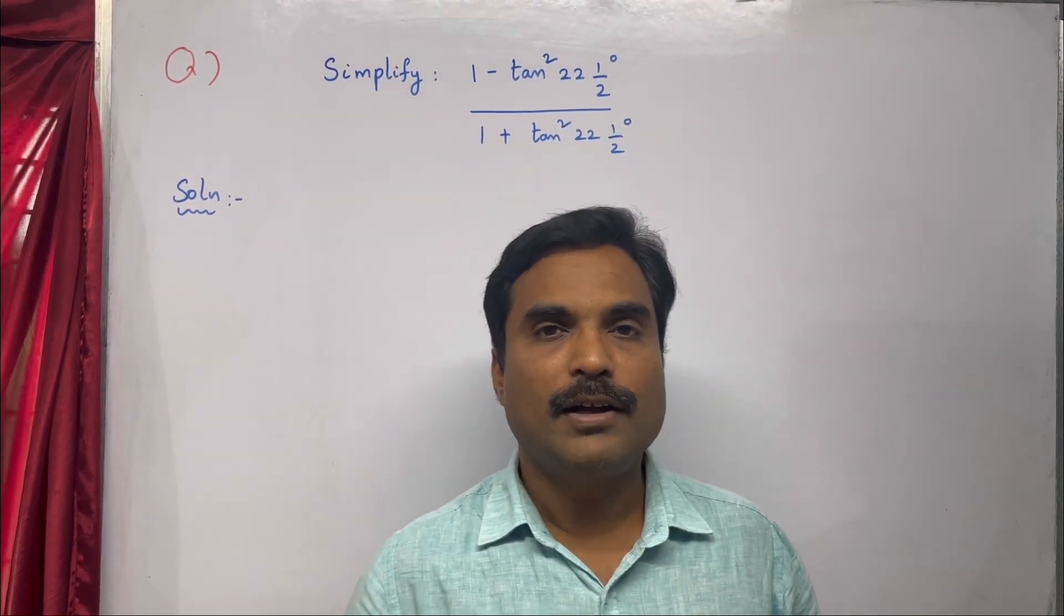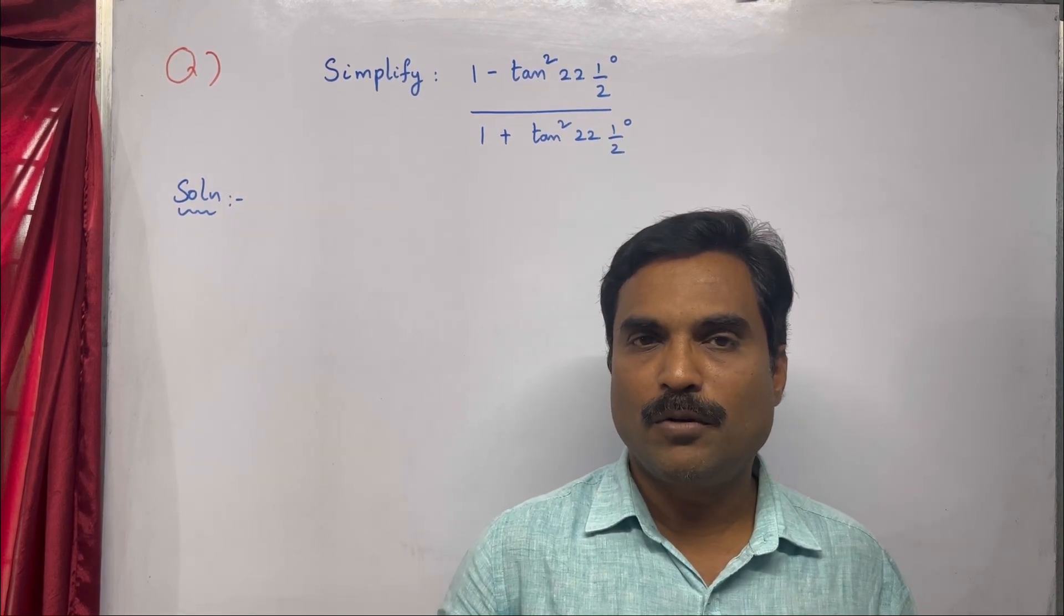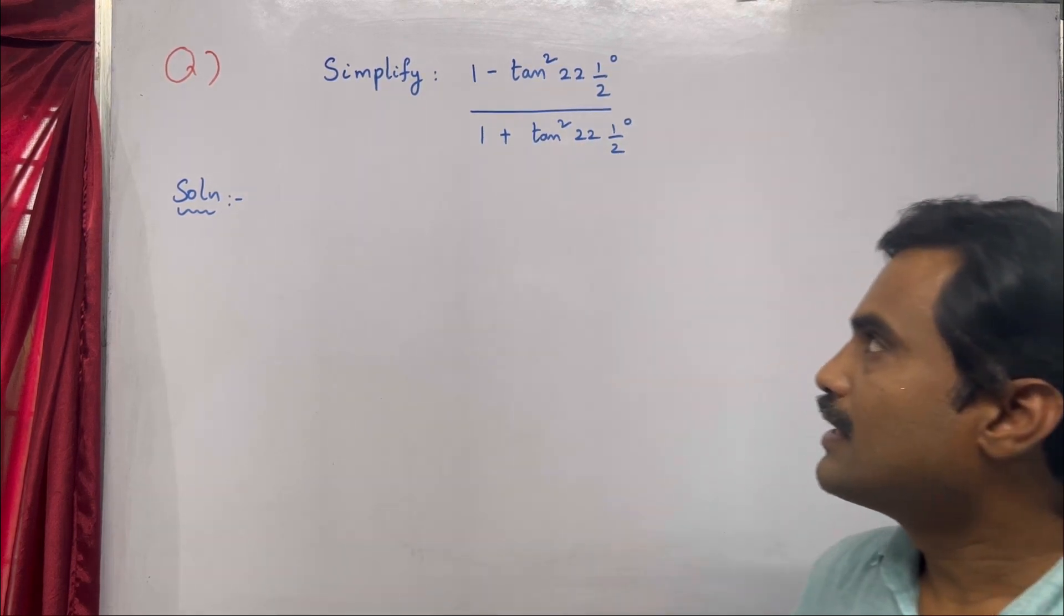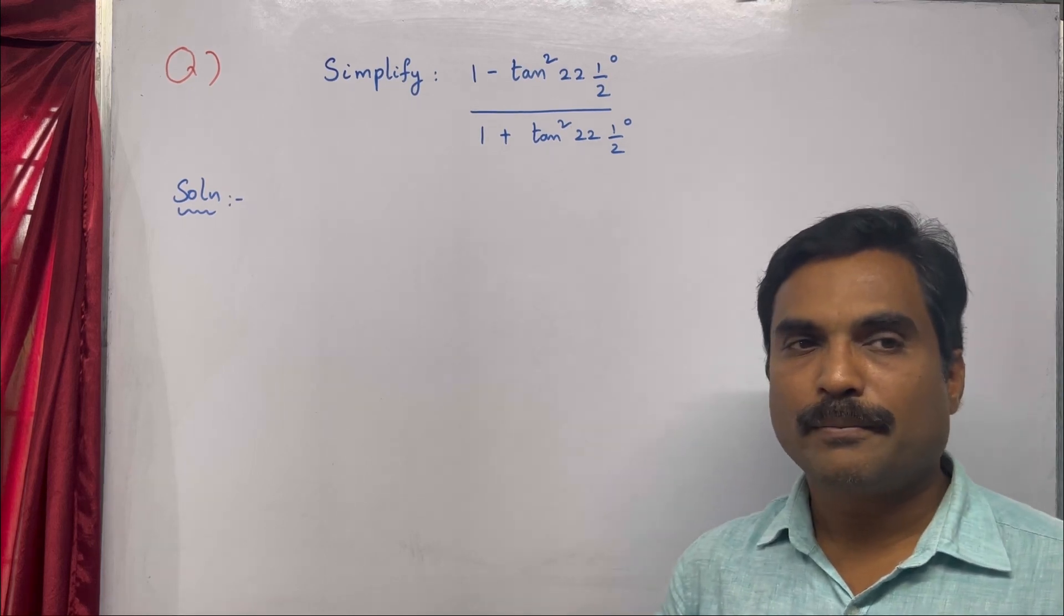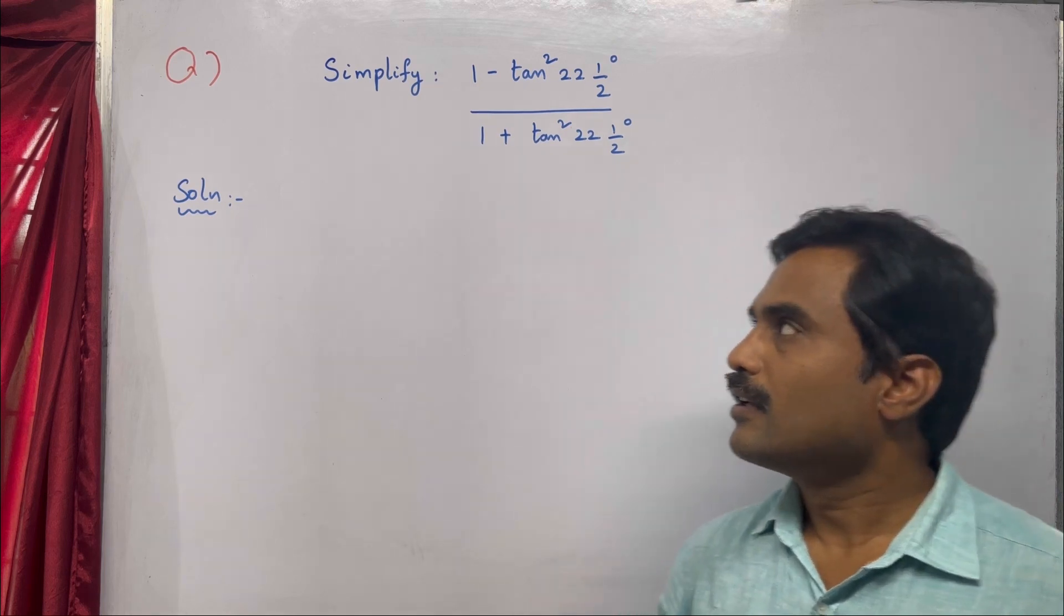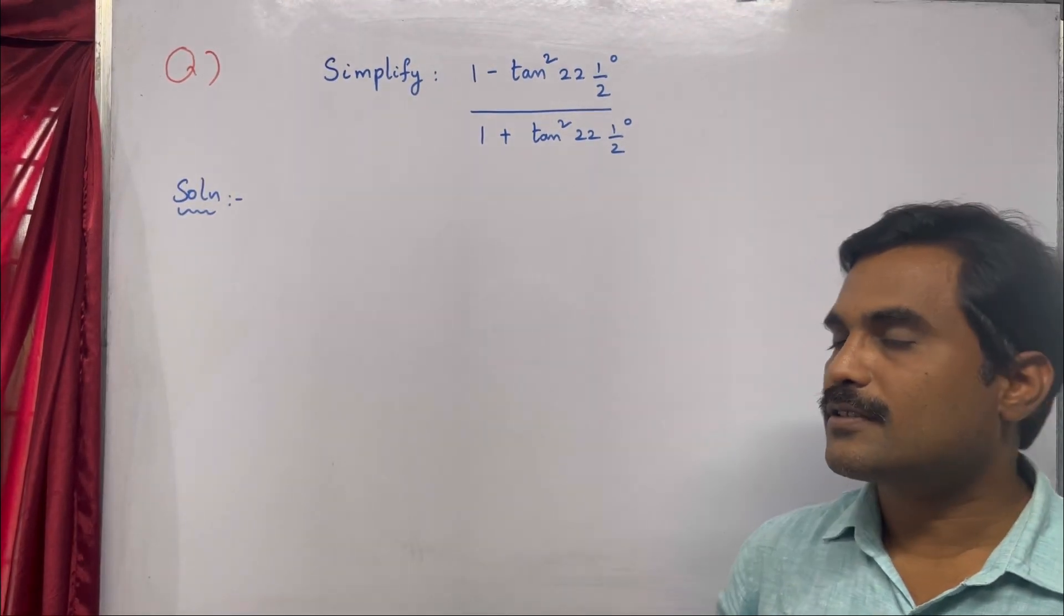Hi dear friends, welcome to my channel. In this new video I'm going to solve a mathematical problem under the topic trigonometry. The problem is: simplify 1 minus tan squared 22 and 1/2 degrees divided by 1 plus tan squared 22 and 1/2 degrees.